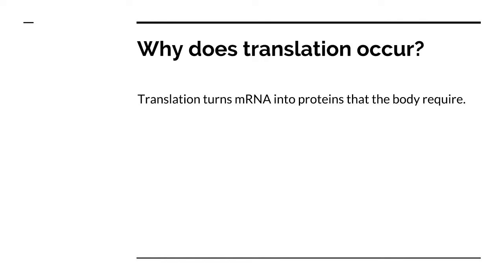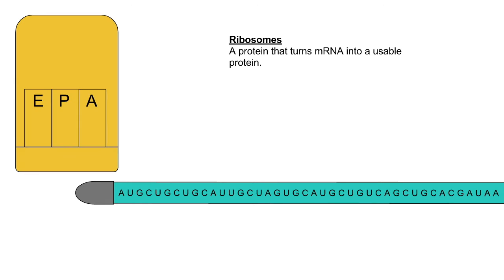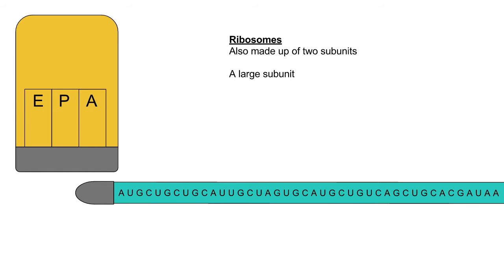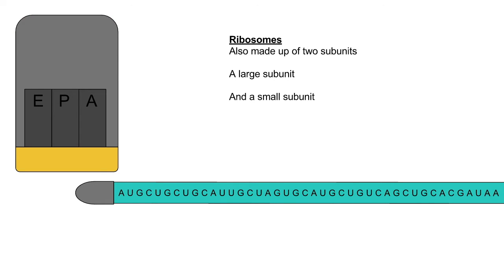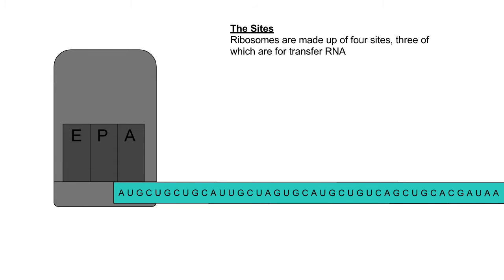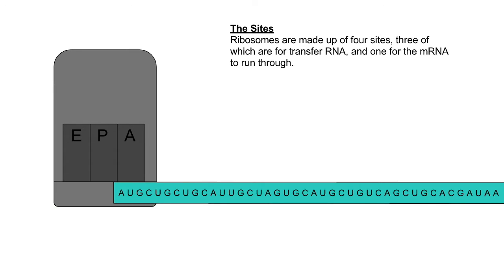Translation occurs to produce proteins from reading the messenger RNA or mRNA. Ribosomes are proteins that create proteins. Ribosomes are made of two subunits: a larger subunit and a smaller one. There are a total of four sites in a ribosome. Three of those sites are in the large subunit and are for tRNA. The other site is located in the small subunit and is for the mRNA to run through.